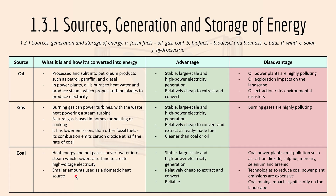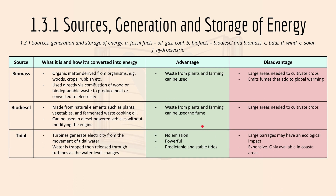Coal: heat energy and hot gas convert water into steam which powers turbines to create high voltage electricity. The advantage is that it's relatively cheap and reliable. The disadvantage is that coal power plants produce pollution such as carbon dioxide, sulfur, and mercury. Technologies to reduce coal power plant emissions are expensive, and coal mining impacts significantly on the landscape.